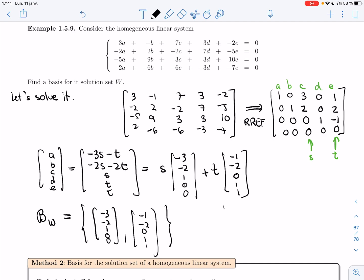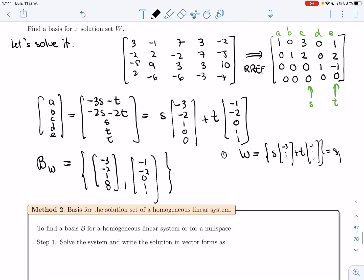All right, the first thing is clear. W is the set of all s times the first plus t times the second. And so it's clear that this is the span of my basis.